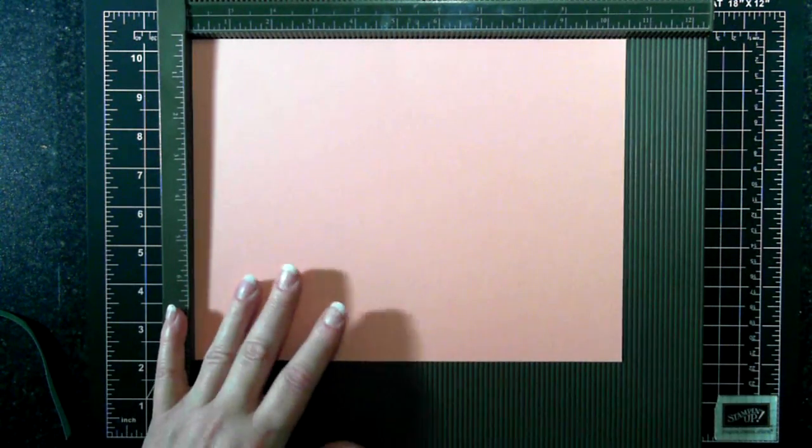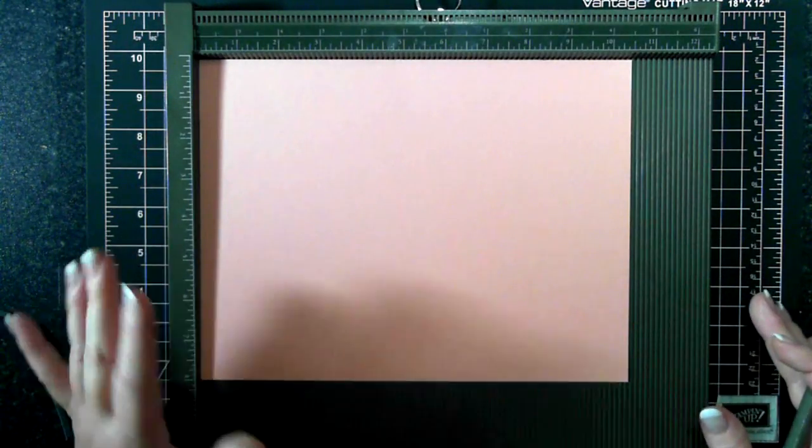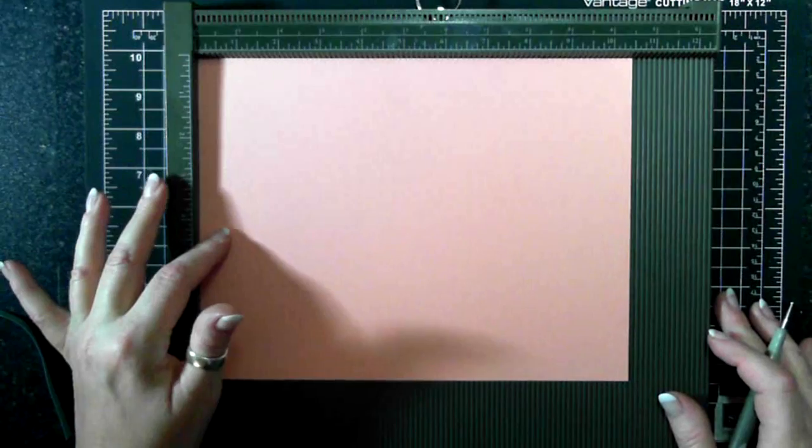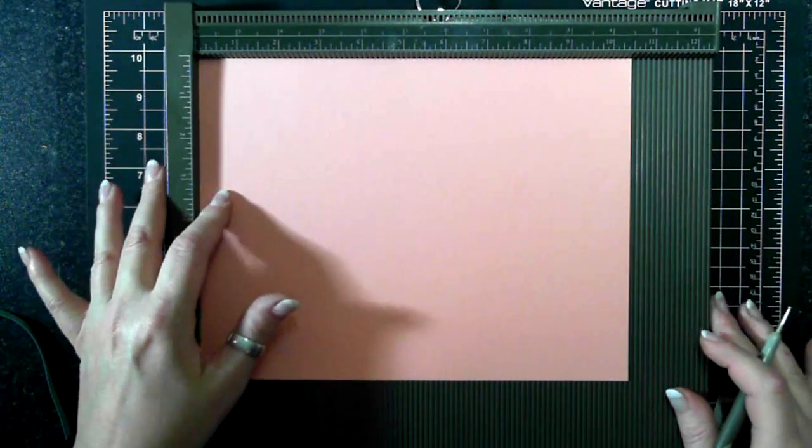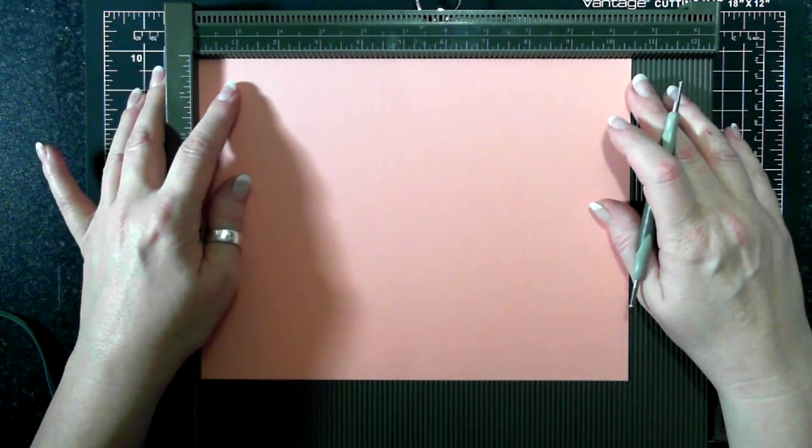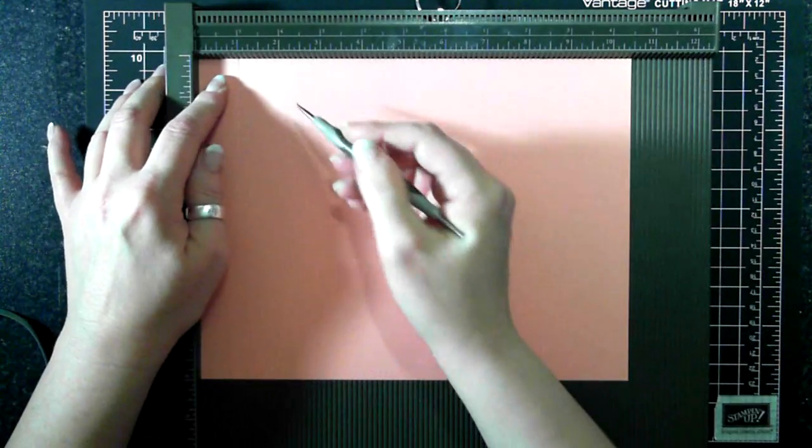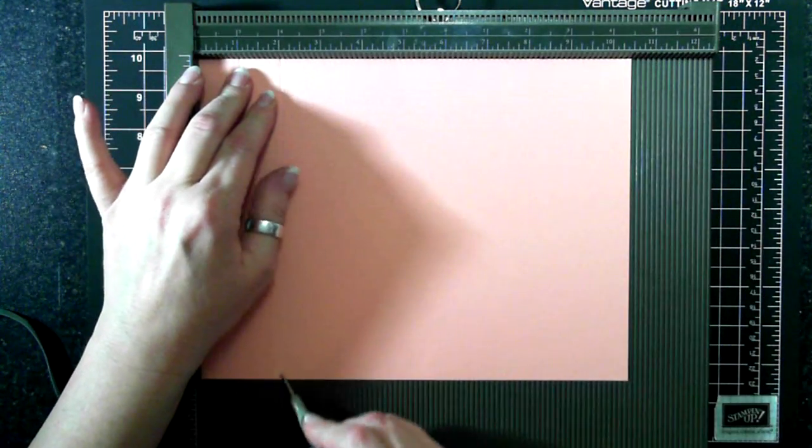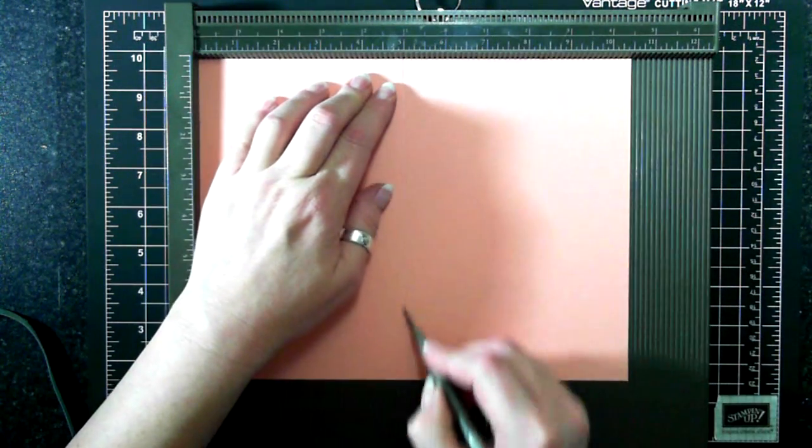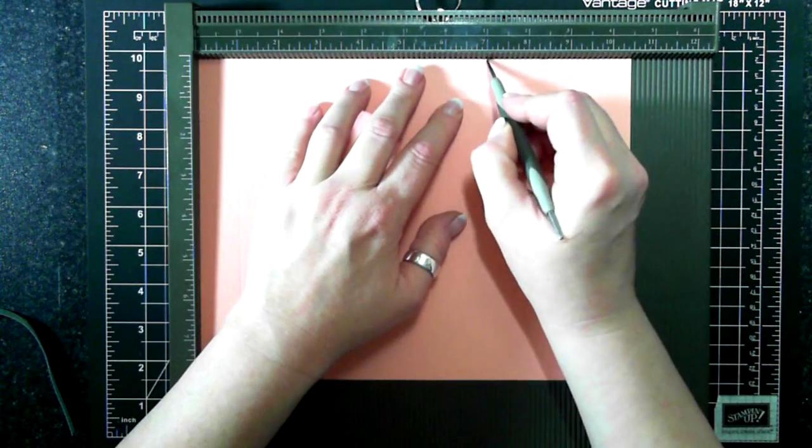So today you're going to need a piece of cardstock that is 10 and a half by 8 inches. On the long side—I usually start with the long side—our scoring is pretty simple. It's going to be 1, 2, 5, 6, and 7. So that's our gusseted area and that's our gusseted area.